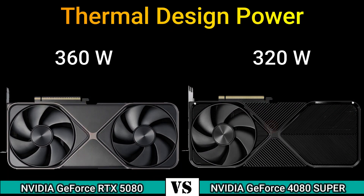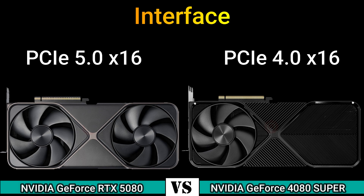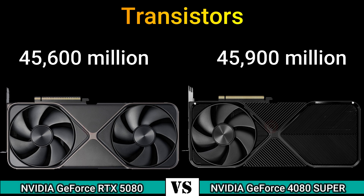Next, general information. Thermal design power: 360 W and 320 W. Suggested PSU: 750 W and 700 W. Interface: PCIe 5.0 x16 and PCIe 4.0 x16. Process size: 4 nm and 5 nm. Transistors: 45,600 million and 45,900 million.